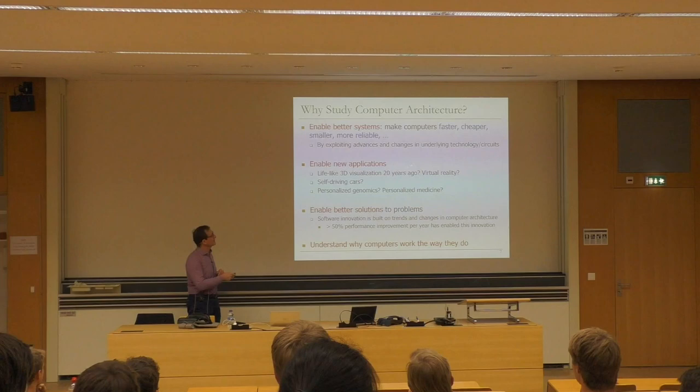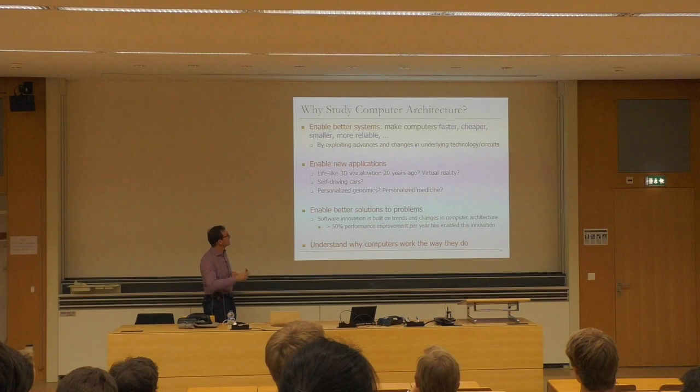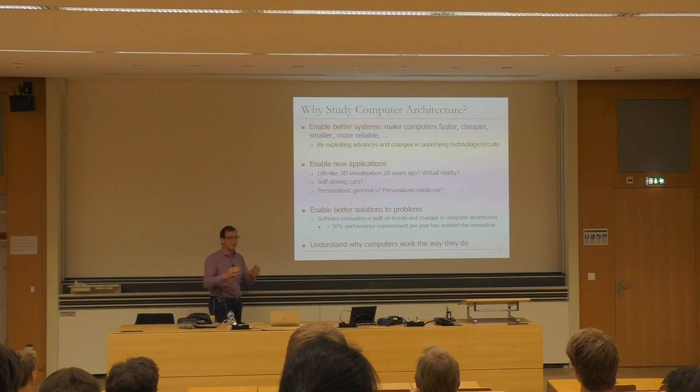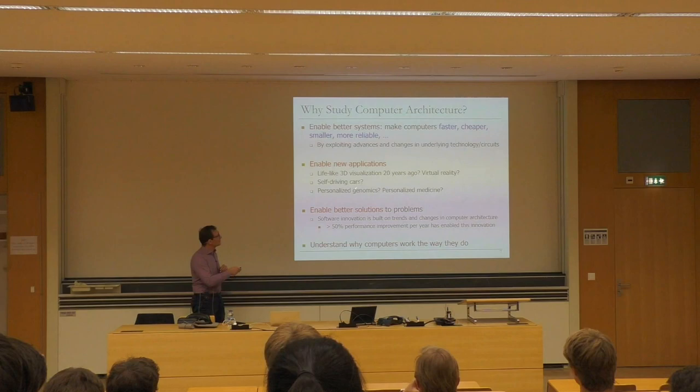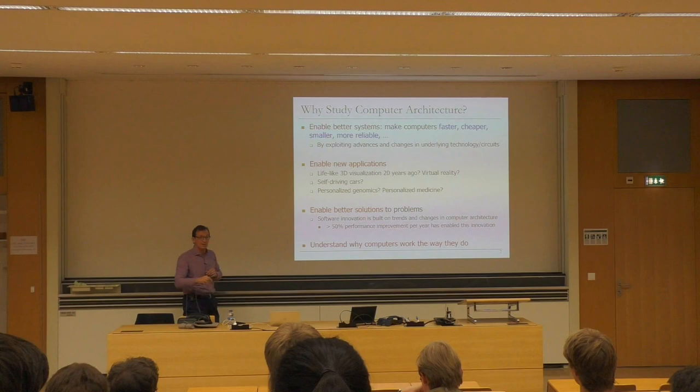Basically, we want to enable better systems — that's why studying computer architecture is a good idea. By being a computer architect, you can make entire systems faster, cheaper, smaller, more reliable, more secure. You can exploit advances in underlying technology and circuits, as well as applications. Today especially, we're seeing a lot of chips built for machine learning. There's a good reason for it — there's a huge demand for this application today.